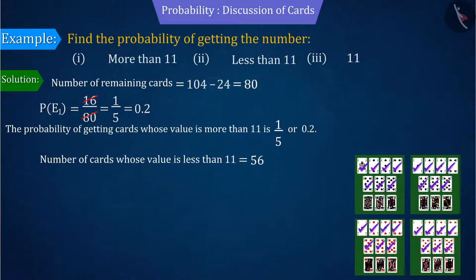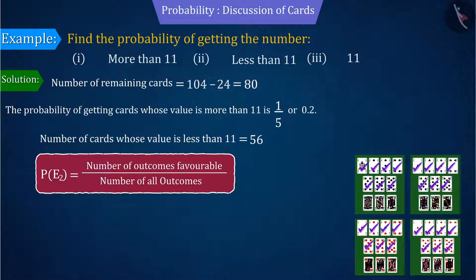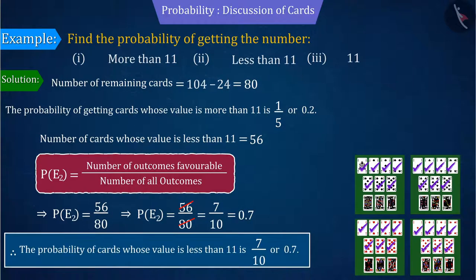Therefore, we can tell from the probability formula that the probability of getting cards whose value is less than 11 is 0.7.